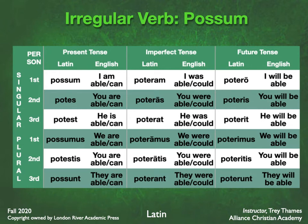That same rule applies for the imperfect: poteram. Eram, eras, erat, eramus, eratis, erant — all of those begin with an E, so you lead with pot: poteram, poteras, poterat, poteramus, poteratis, poterant. The same thing applies for the future: potero, poteris, poterit, poterimus, poteritis, poterunt. All of those begin with an E, so you add P-O-T.